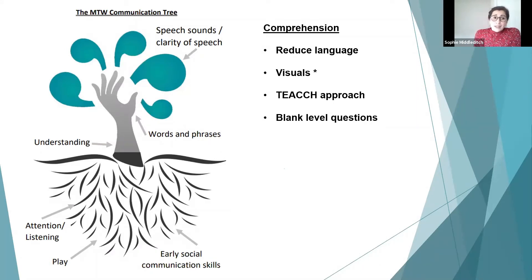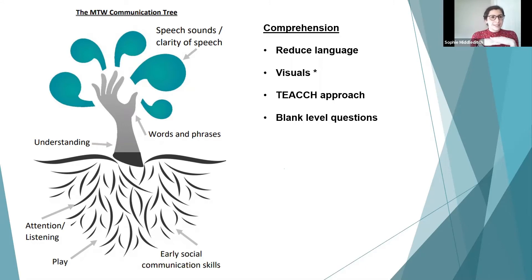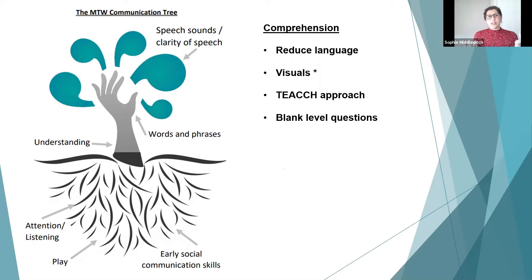Blank Level 4 also involves problem-solving, and the 'why' questions are often really tricky. A useful strategy is to bring 'why' questions down by rephrasing them. Instead of 'Why is Lucy crying?' — which can be hard — say 'What happened to Lucy?' That reduces the complexity of the question structure and makes it much easier for the child to respond.